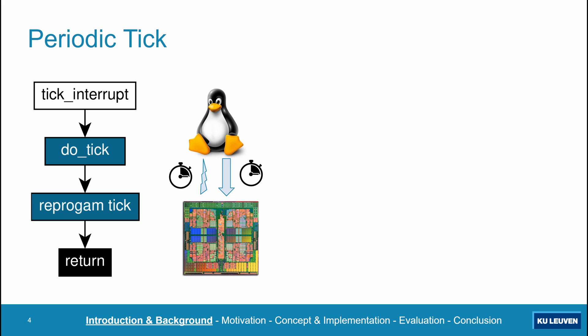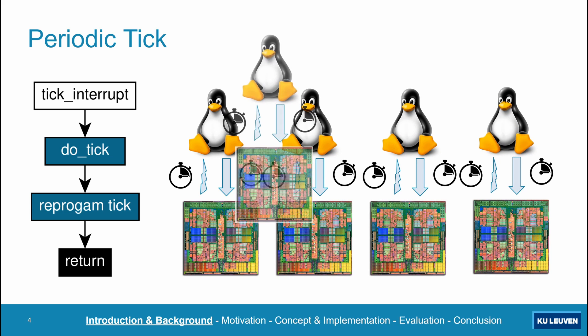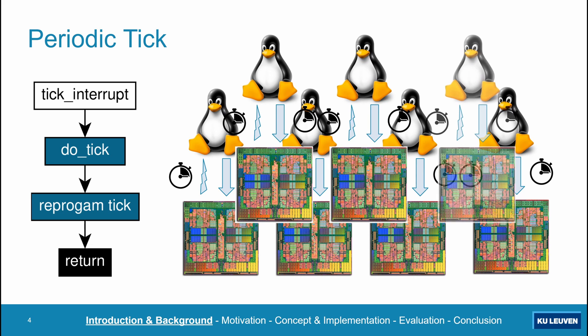Historically, all operating systems use a simple periodic scheduler tick recurring at a fixed interval. In modern systems this is however problematic, because the tick has to be programmed on every CPU in the system. Because modern systems often contain many cores, most of which are idle most of the time, lots of resources are being wasted on processing scheduler ticks that have no real purpose, since idle CPUs obviously cannot perform any useful work anyway.